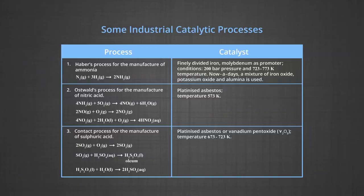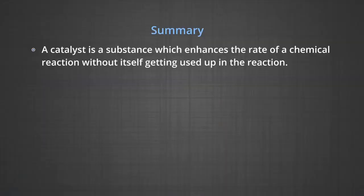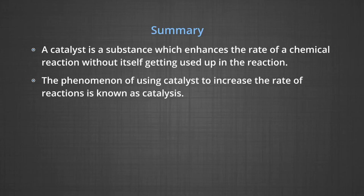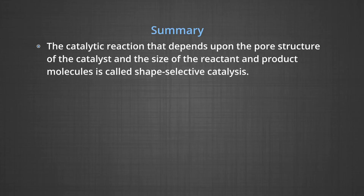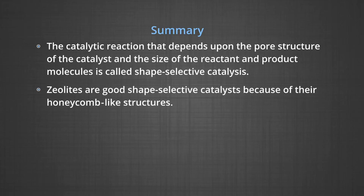We now see the applications of catalysts in industry. Some of the important technical catalytic processes are listed in the table to give you an idea about the utility of catalysts in industries. Let me recap the essential points. A catalyst is a substance which enhances the rate of a chemical reaction without itself getting used up in the reaction. The phenomenon of using a catalyst to increase the rate of reaction is known as catalysis. In homogeneous catalysis, the catalyst is in the same phase as the reactants; in heterogeneous catalysis, the catalyst is in a different phase. Shape selective catalysis depends upon the pore structure of the catalyst and the size of molecules. Zeolites are good shape selective catalysts because of their honeycomb-like structures.